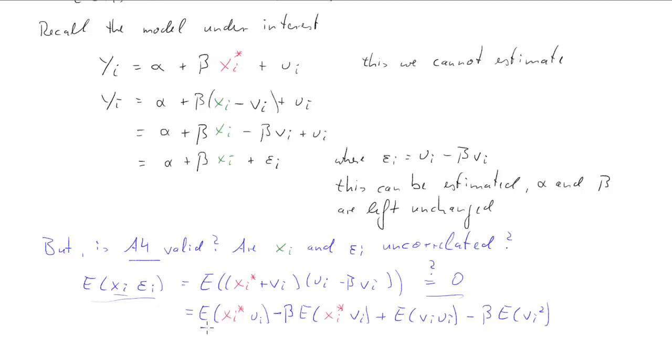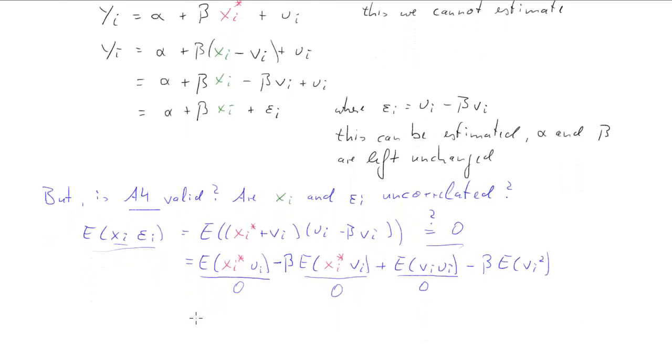Now we should recognize that the first three terms are going to be equal to zero. The second and third due to our assumptions on the measurement error. The first due to a maintained assumption of the explanatory variable in the original model which is xi asterisk and the error term ui being uncorrelated.